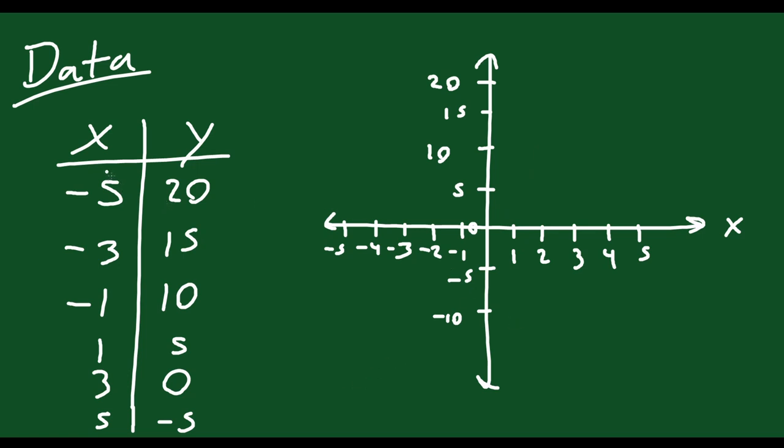So first, you want to graph your first point. (-5, 20). So you go -5, 20. Right there. Then you want (-3, 15). Just like that. Then you want (-1, 10). Just like that. (1, 5). Just like that. Then you want (3, 0). Then you want (5, -5). Just like that.